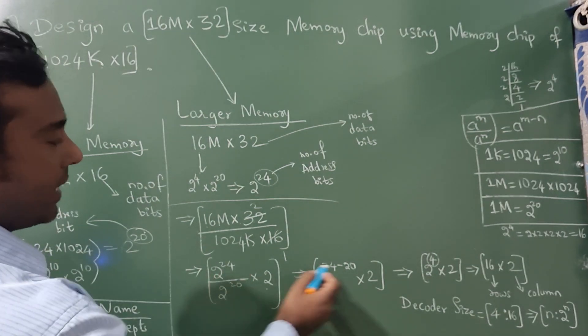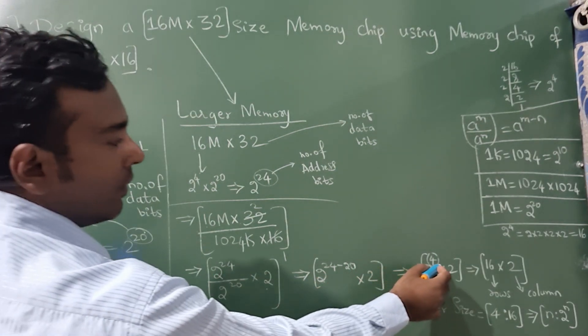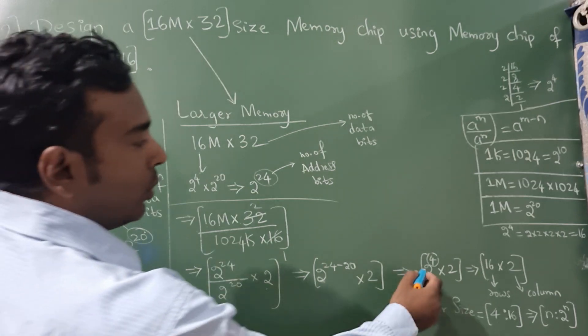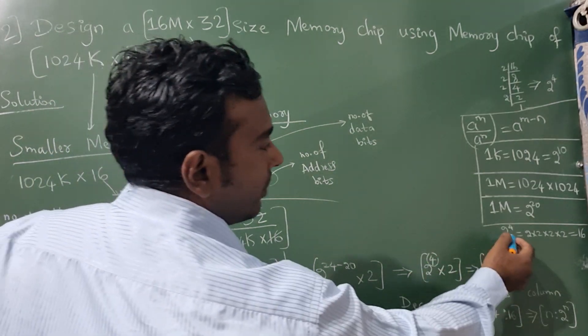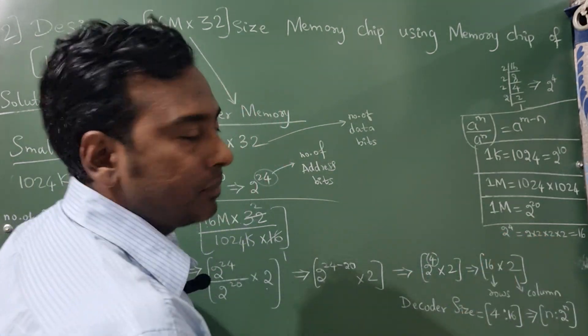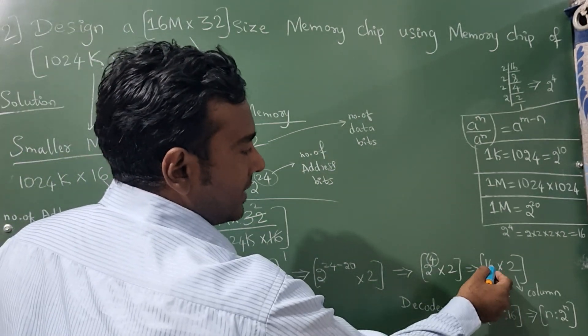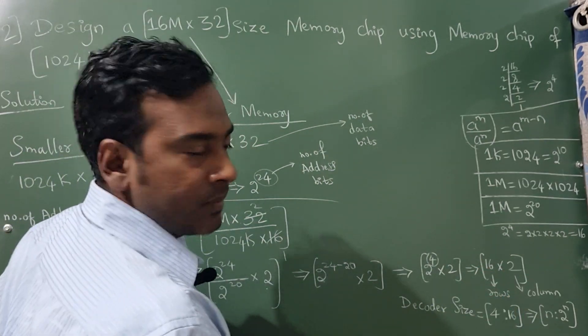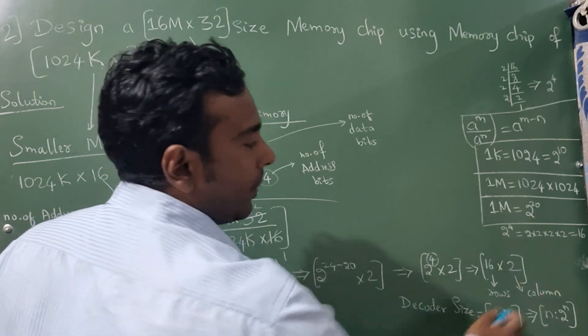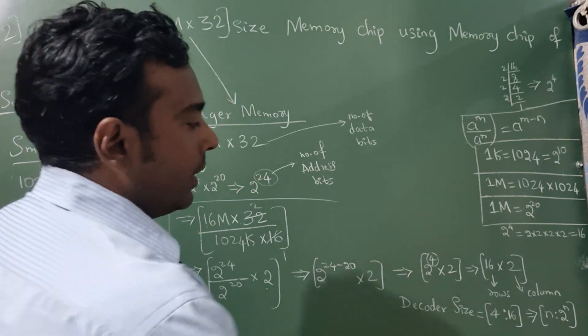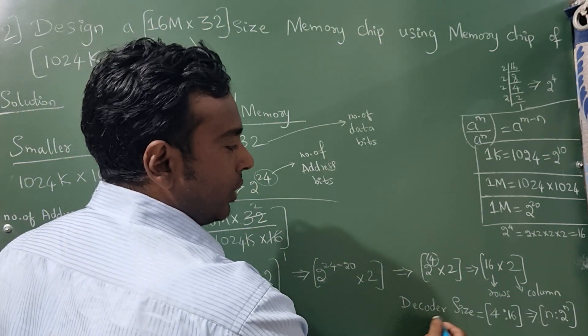From this exponential formula I can subtract this: 24 minus 20 is 4. Now 2 raise to 4 is 16 from here exponential, now into 2. This 16 is number of rows and this 2 is number of columns.